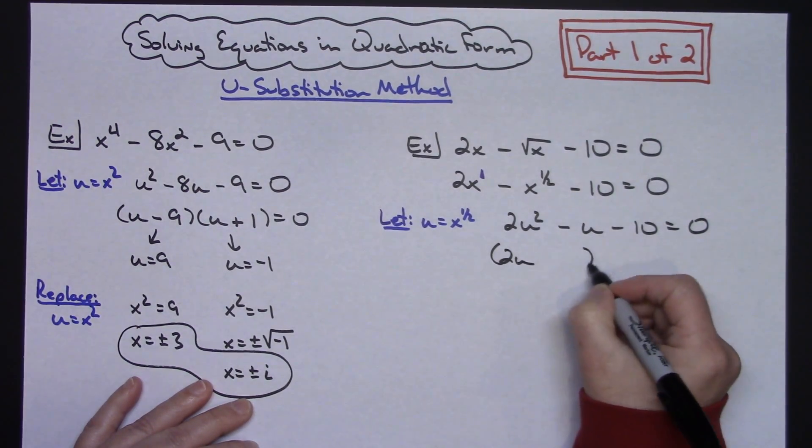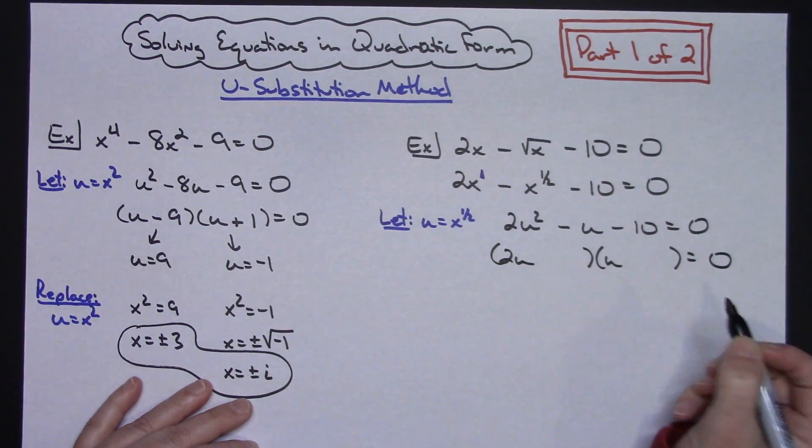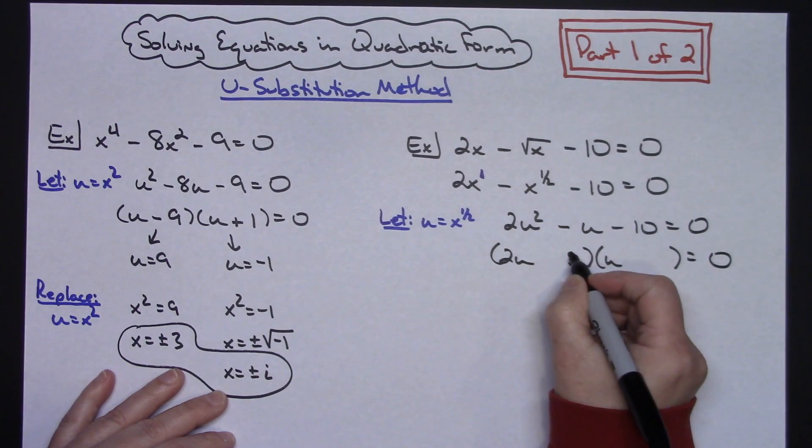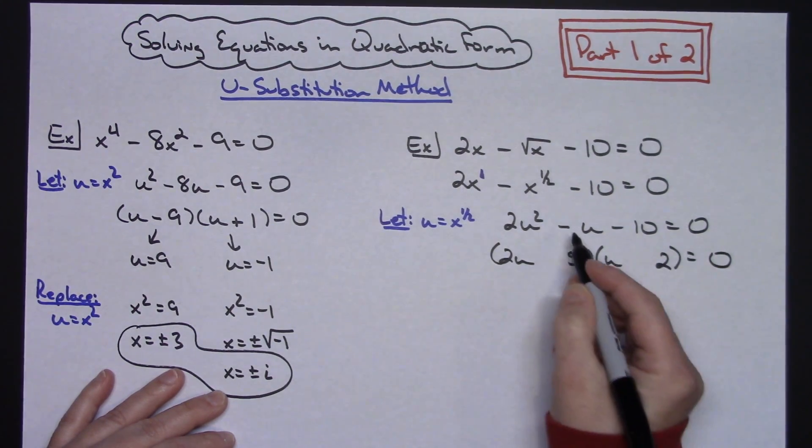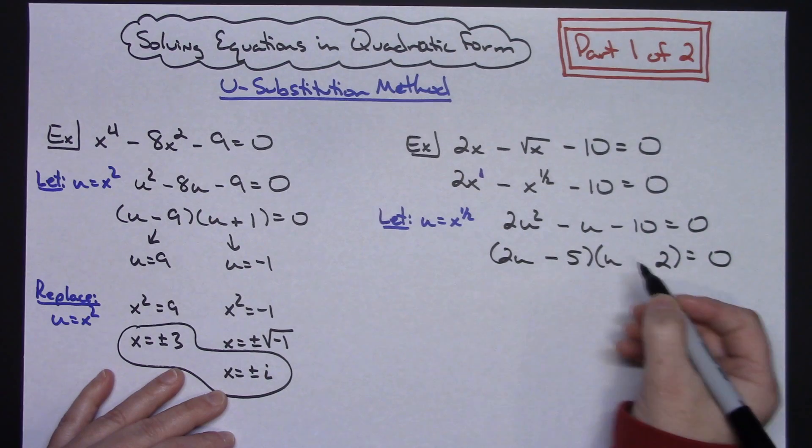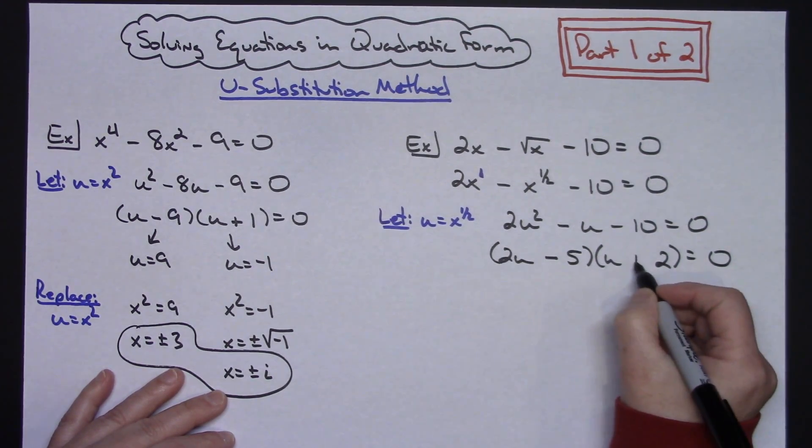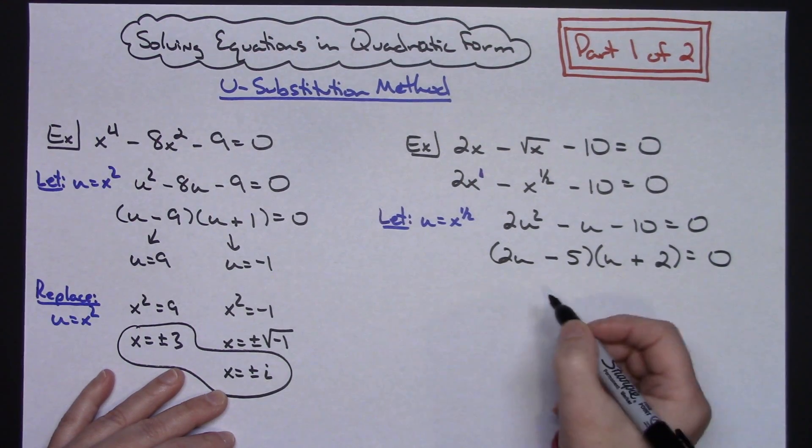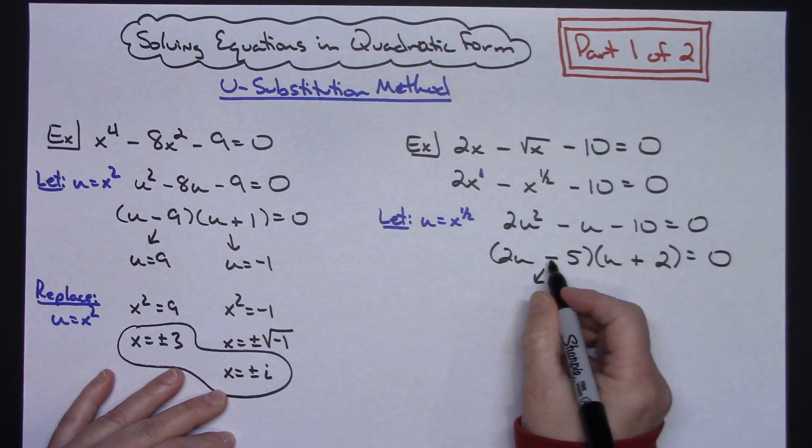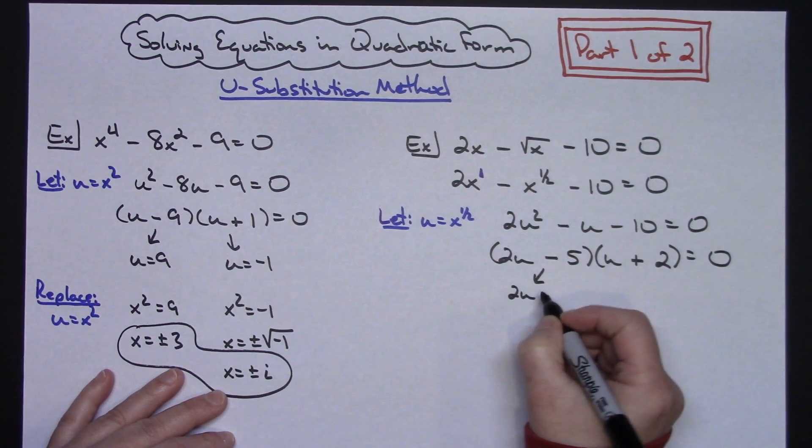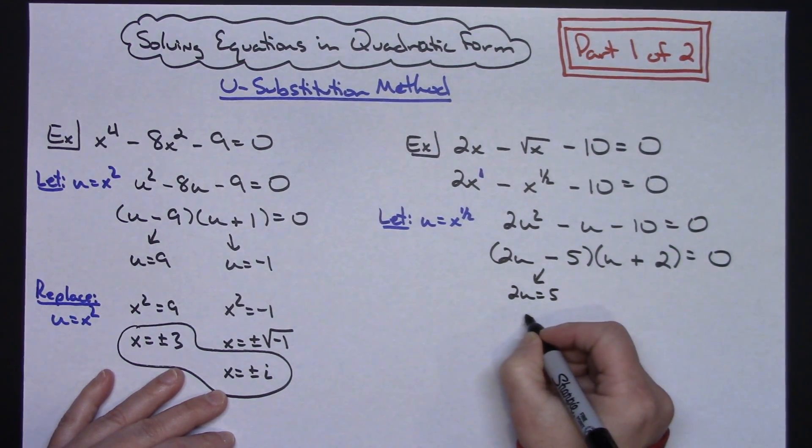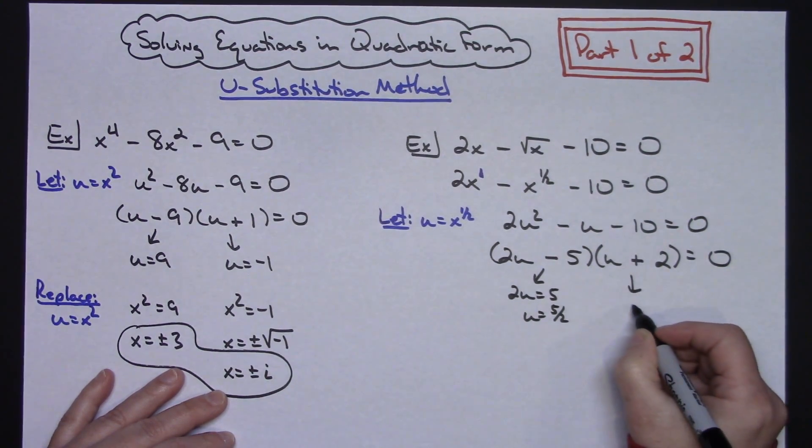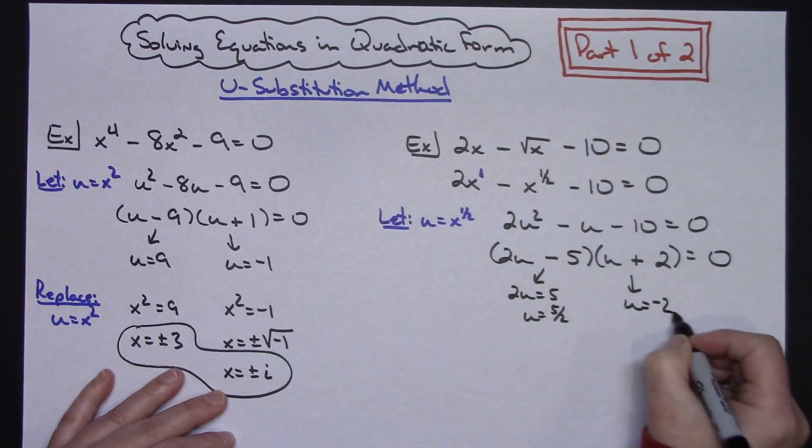So we'll go with 2u and u for our guess and check. And then, let's see, factors of 10, I need to get a 1 in the middle. Let's put a 5 here and a 2 here. I need a -1, so that 5u right there needs to be negative. And then +4u right there will give me the -u in the middle. Now setting both of these equal to 0. Let's go ahead and add 5 to both sides. So 2u = 5, u would equal 5/2 on this one. And on this one, subtract 2 from both sides. u would equal -2.